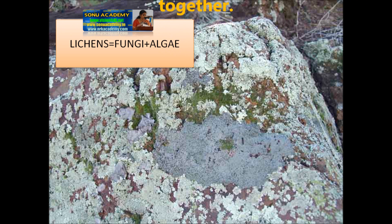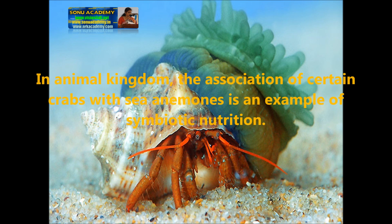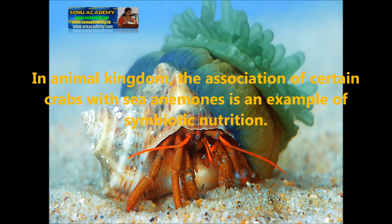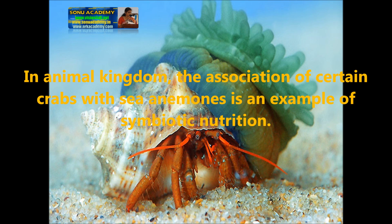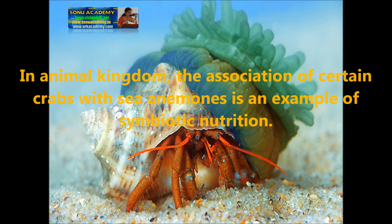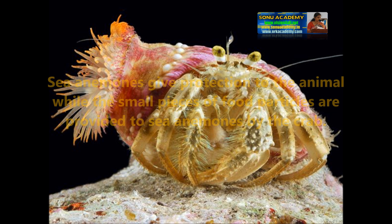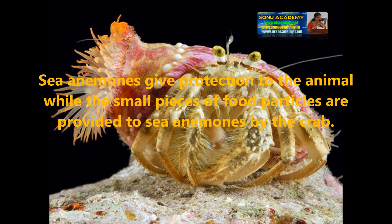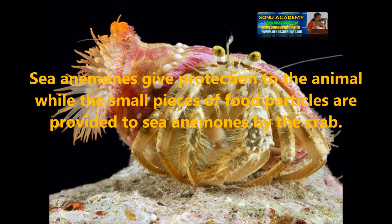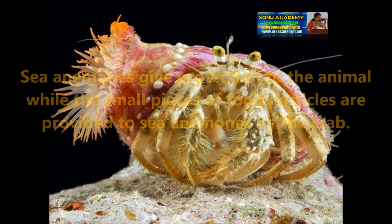Similarly, symbiotic association is seen in lichens, where algae supplies food to fungi and the fungi provides protection to the algae, and they live together. In the animal kingdom, the association of crabs with sea anemones is an example of symbiotic nutrition. The sea animal gives protection to the crab, while small pieces of food particles are provided to the sea animal by the crab.